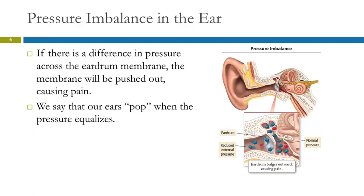When your ears pop and things feel and sound better, that's the pressure in your inner ear being released. When you come back down, the opposite is true — high pressure outside and low pressure inside, so the eardrum bulges the other way. Yawning or chewing gum helps open up the eustachian tube. Babies have little tiny eustachian tubes, which is why they scream on airplanes — their ears hurt.